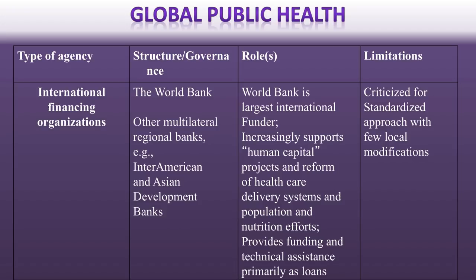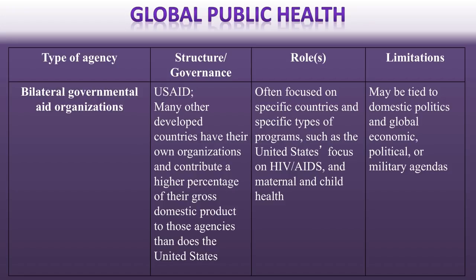The World Bank is an important organization to consider in particular, because they do a lot of work trying to support local governments — with some controversy around how it does this — but they do engage with trying to address public health problems and build capacity for those countries, such as nutrition or other considerations. Then there are bilateral governmental aid organizations. For example, the United States runs a USAID program which looks at HIV around the globe and tries to prevent it internationally. These types of organizations can provide real benefits, but they're often really tied to national or specific interests that are specific to the funding body.